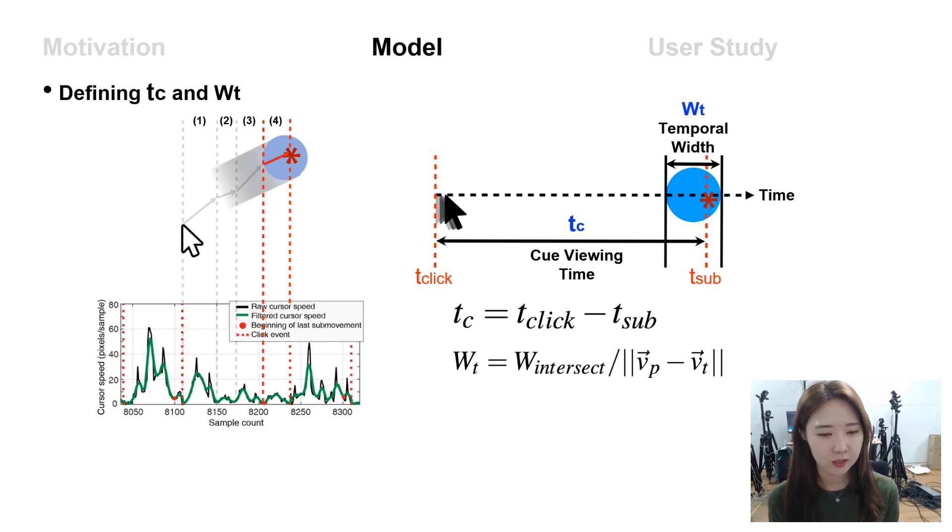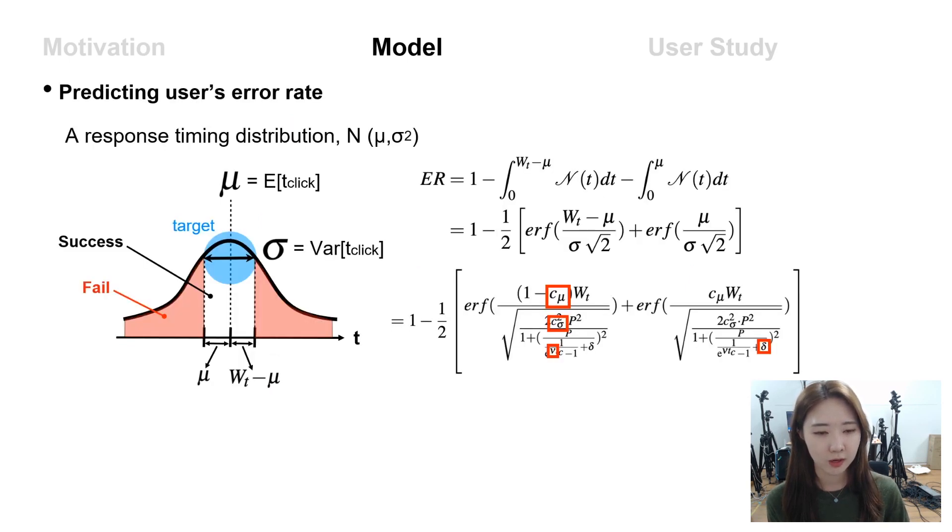We define Tc as the duration of the last sub-movement, and Wt, the temporal width, is defined as the time duration the cursor passes through the target. Then, we are able to calculate an error rate by substituting the Wt and Tc to this formula.